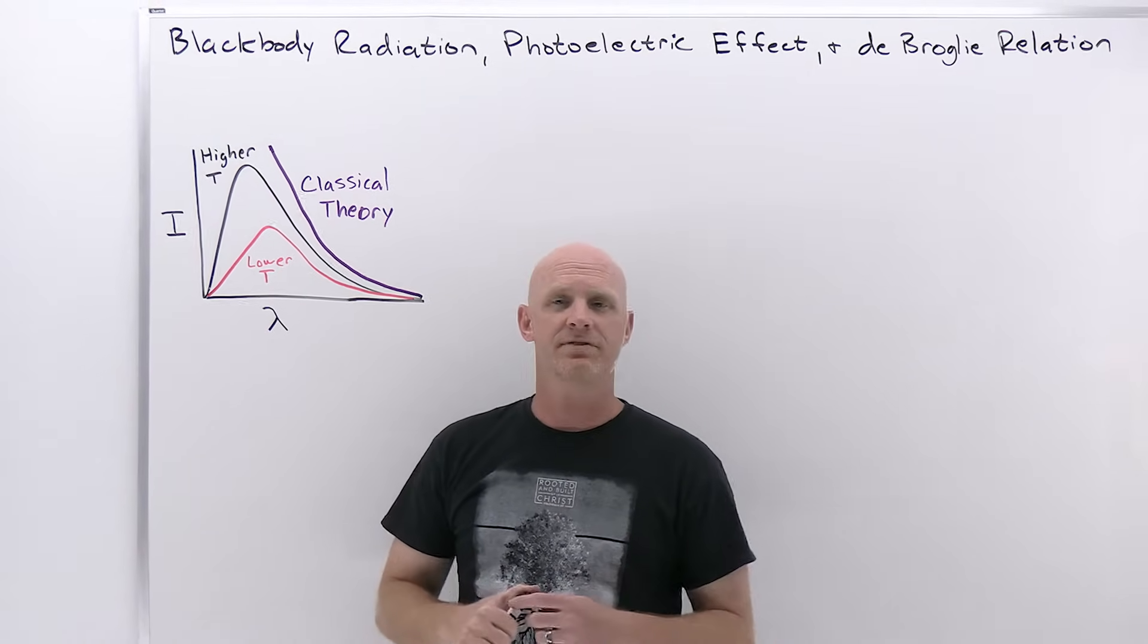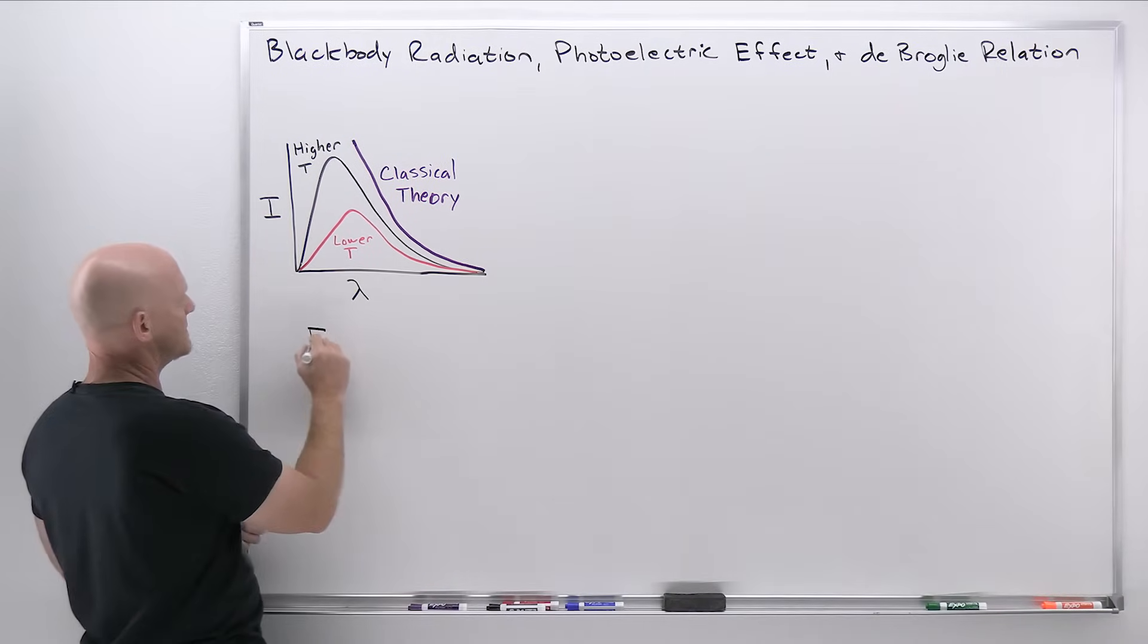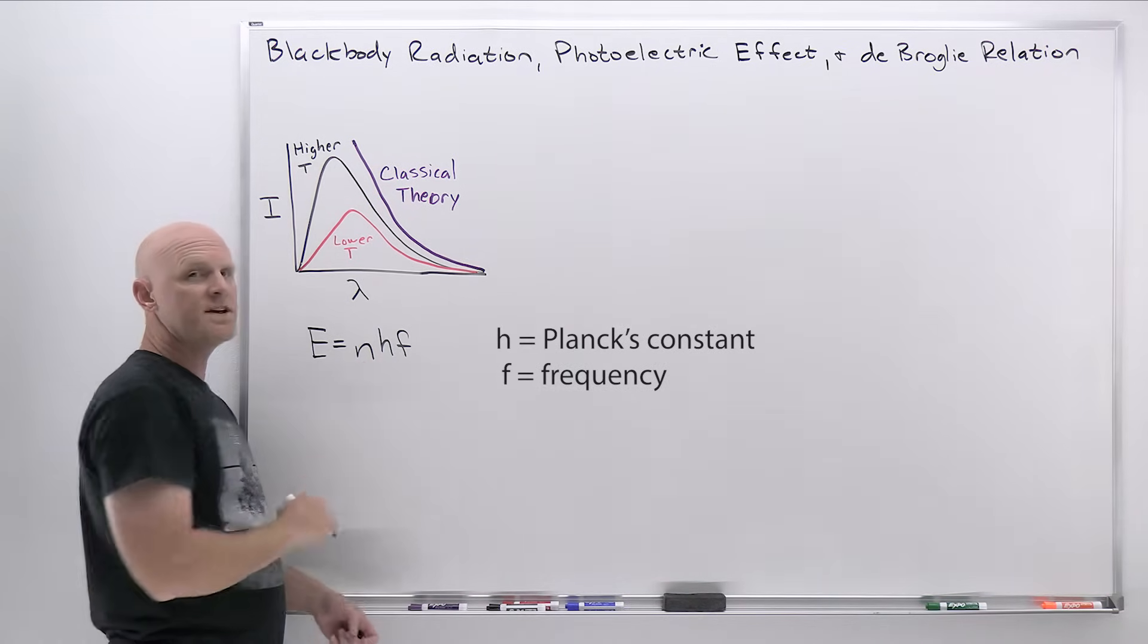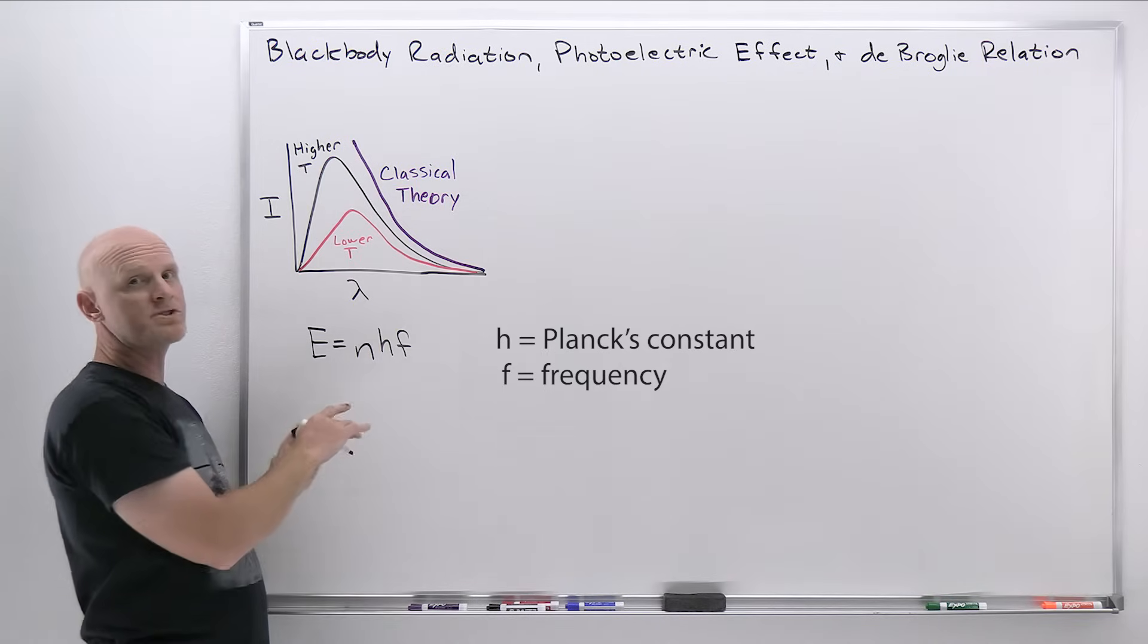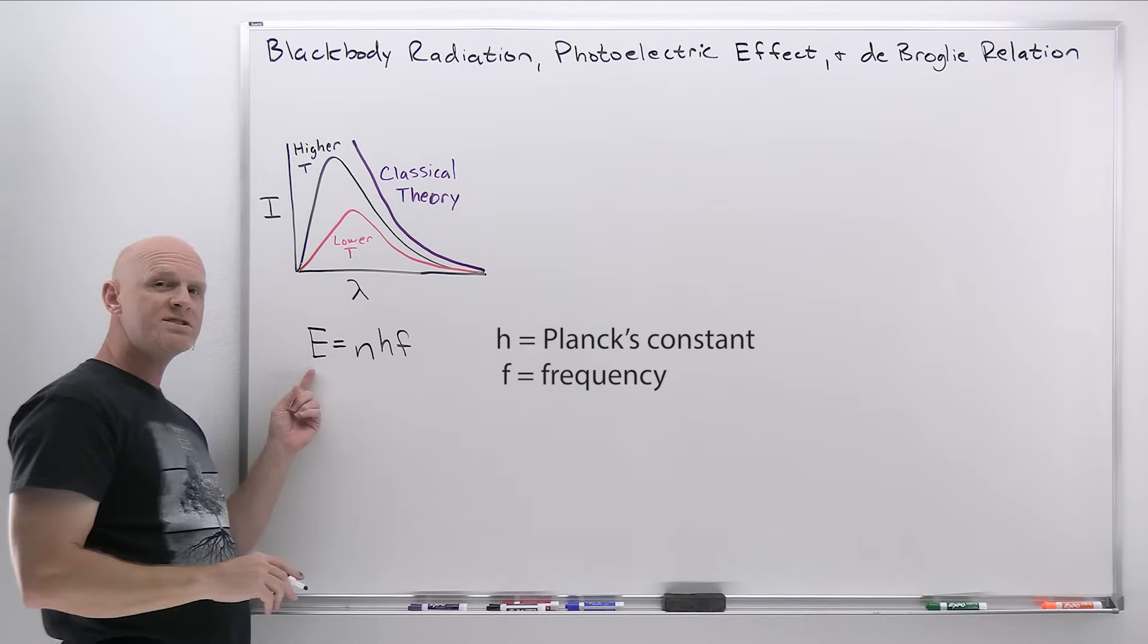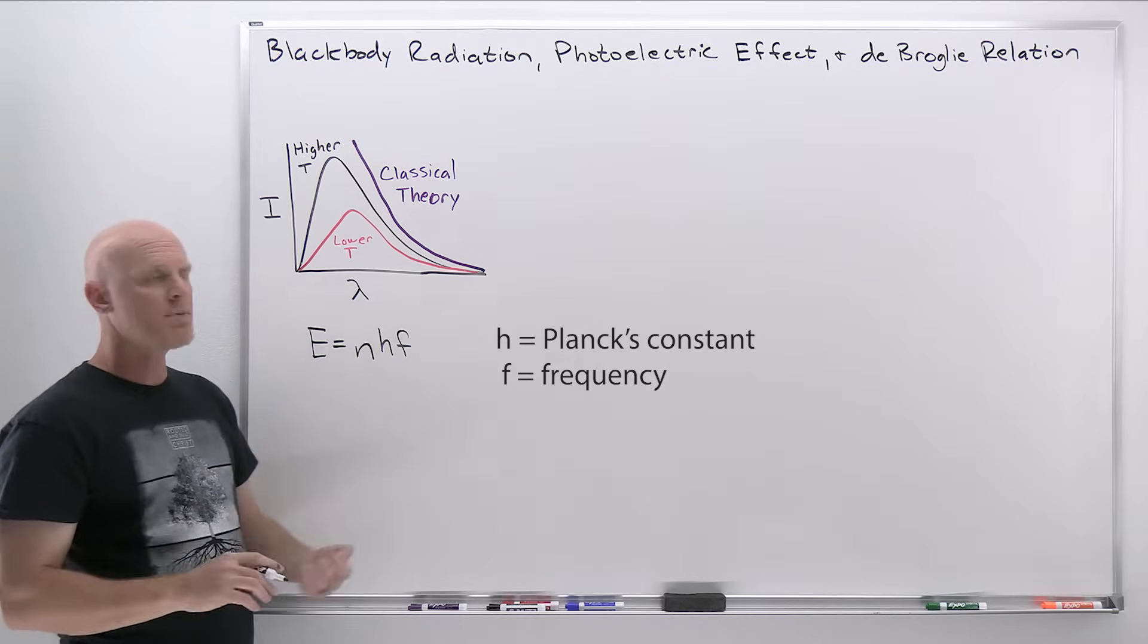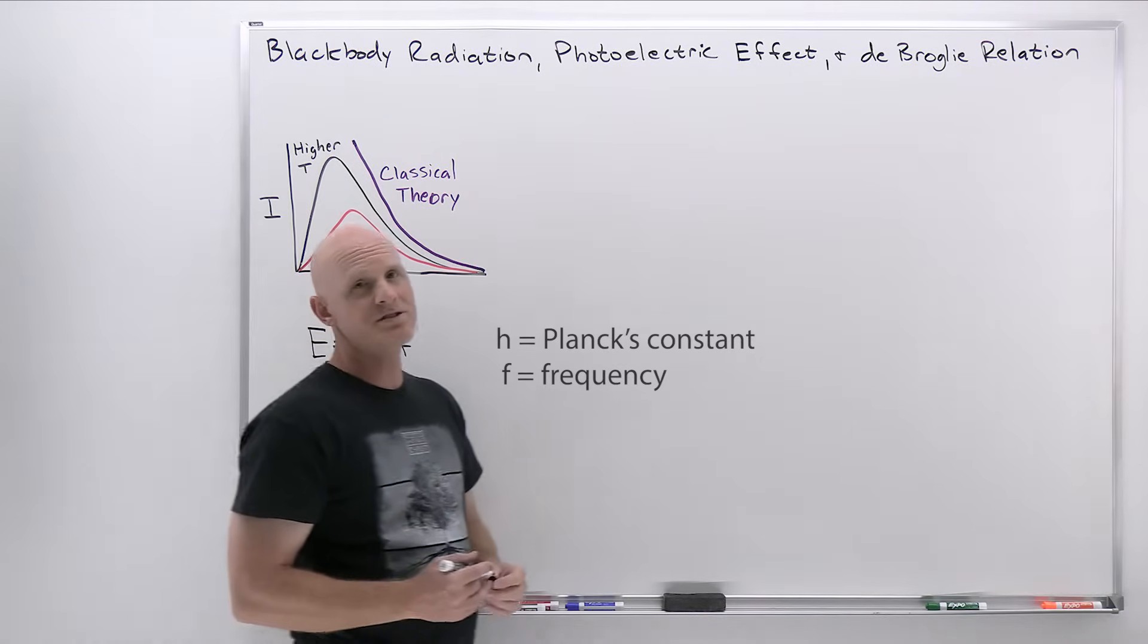Now, it turns out a guy by the name of Max Planck came up with an idea. He said, what if these black bodies are composed of harmonic oscillators that have characteristic energies, and these energies only exist as multiples of hf, where n is an integer. He didn't have a theoretical reason why it had to be this way, other than the fact that if he made this assumption, the equations he derived out of it matched exactly what we see for black body radiation. And the idea is that the energies of these oscillators only existed at certain quantities. That is the heart of quantum mechanics. It's that only certain quantities of energy are possible.